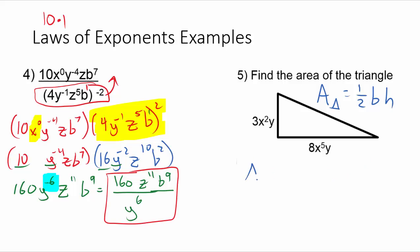So, if I'm trying to find the area of this triangle, I need one half, whatever the base is, times whatever the height is. And if we look here, we've got a base of 8x to the fifth y, and we've got a height here of 3x squared y. So, so far, so good. Now, all we have to do is simplify this expression.